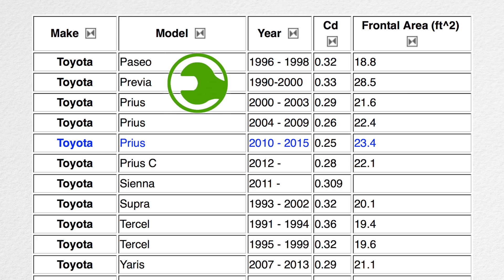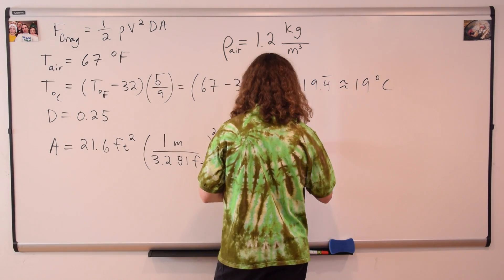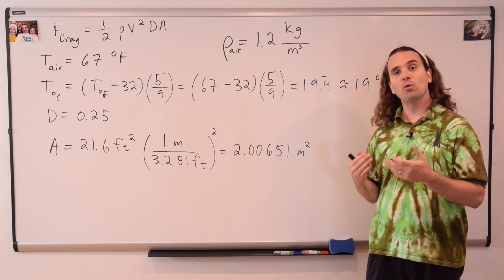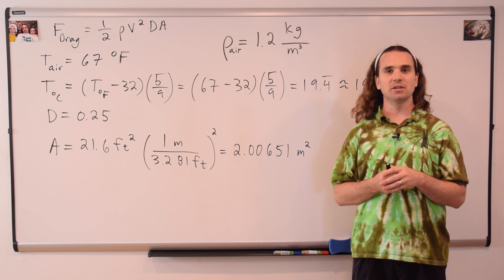So, we multiply the cross-sectional area by the square of the quantity one meter over 3.281 feet. To get a cross-sectional area of 2.00651 meters squared.